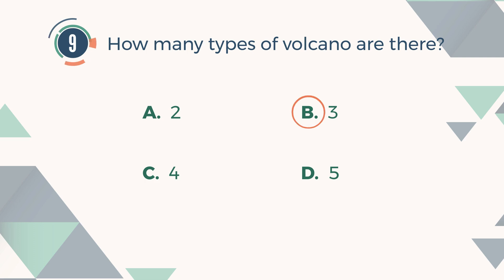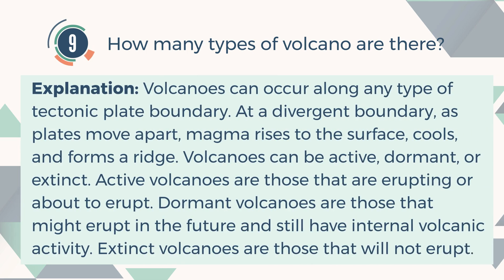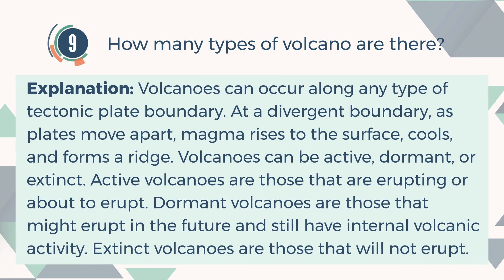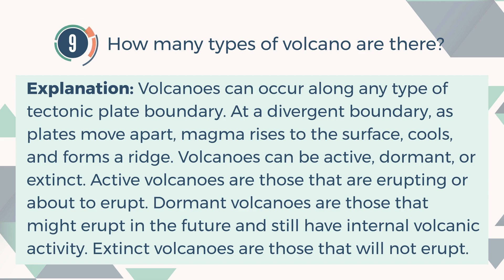The correct answer is B. 3. Explanation: Volcanoes can occur along any type of tectonic plate boundary. At a divergent boundary, as plates move apart, magma rises to the surface, cools, and forms a ridge. Volcanoes can be active, dormant, or extinct. Active volcanoes are those that are erupting or about to erupt. Dormant volcanoes are those that might erupt in the future and still have internal volcanic activity. Extinct volcanoes are those that will not erupt.